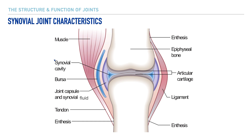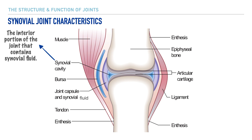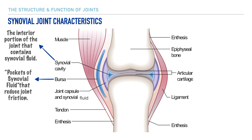First up is the synovial cavity. The term cavity refers to an opening, but this opening is filled by synovial fluid and is enclosed in a capsule. Next we have bursa, which are fluid-filled pockets of synovial fluid. Their function is to reduce friction that can occur with movement in a given joint, and there are multiple bursa within a given joint — specifically between bones, tendons, and/or ligaments.